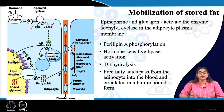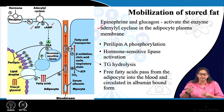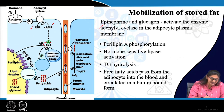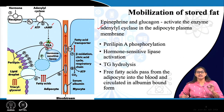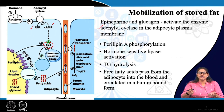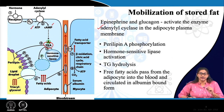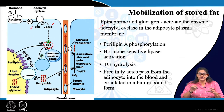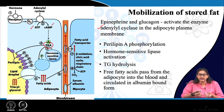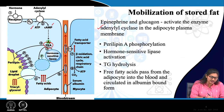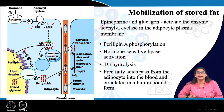Cyclic AMP — if you remember from previous classes — activates cyclic AMP-dependent protein kinase A. This protein kinase A is important for phosphorylation of different proteins and enzymes. One such important protein here is perilipine, which forms the surface of adiposomes. Perilipine is phosphorylated in different regions via protein kinase A.